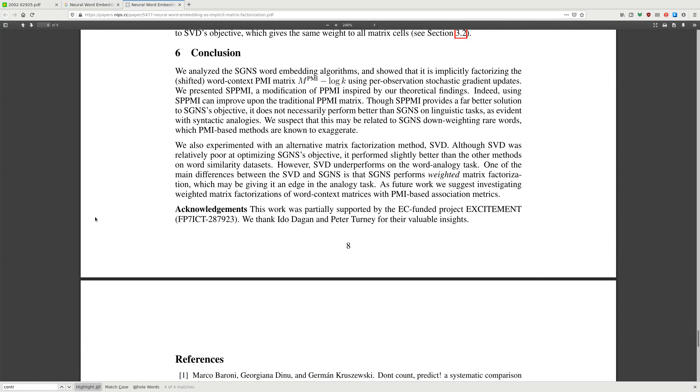We analyzed the SGNS word embedding algorithm and showed that it's implicitly factorizing a shifted word-context PMI matrix, PMI minus log k, using pair-observation stochastic gradient descent. We presented SPMI, a modification of PPMI inspired by our theoretical findings. Indeed, using the SPMI can improve on traditional PMI matrix. Though SPMI provides a far better solution on the SGNS objective, it does not necessarily perform better than SGNS on linguistic tasks, as evident with syntactic analogies.